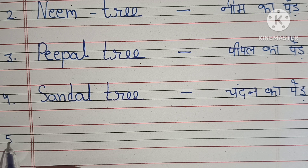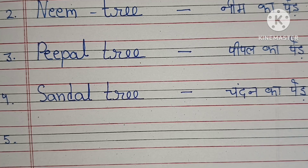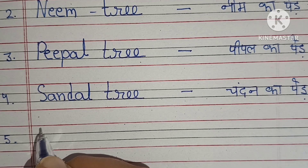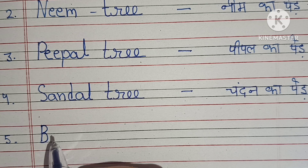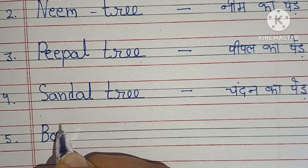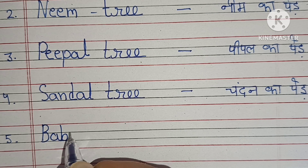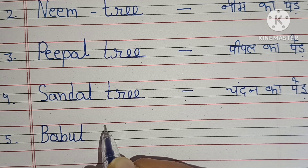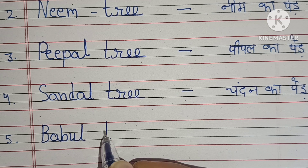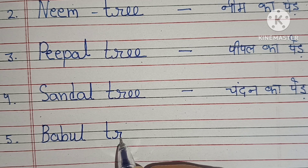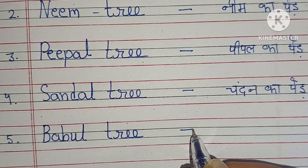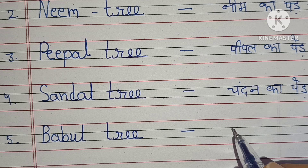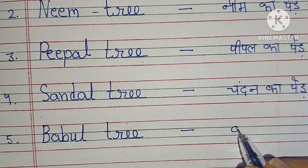Number 5: Babul Tree. B-A-B-U-L, Babul Tree. Babul Tree means Babul Ka Paid.